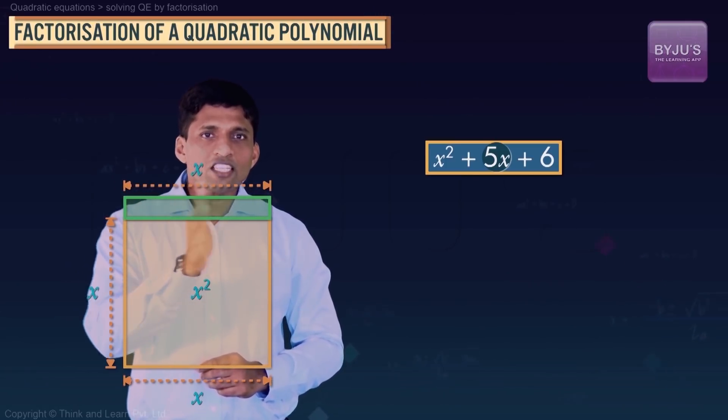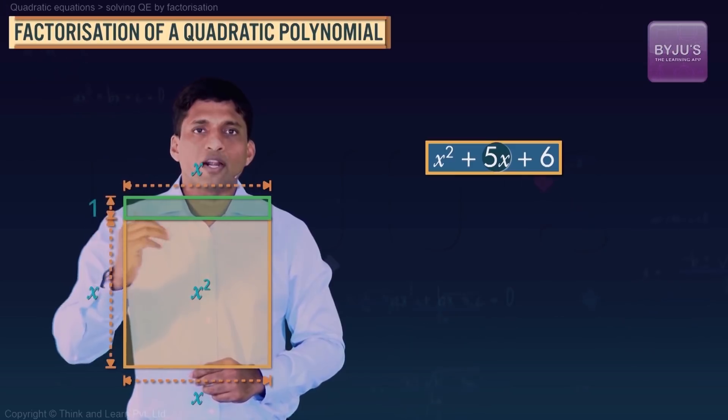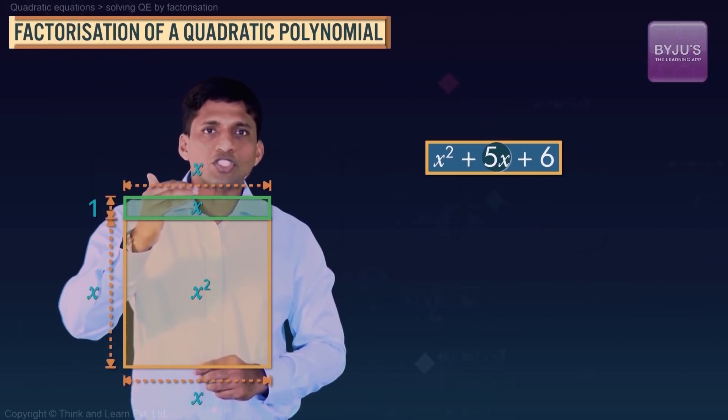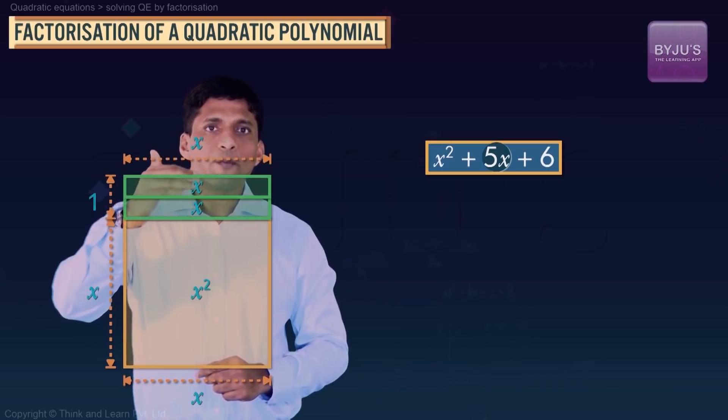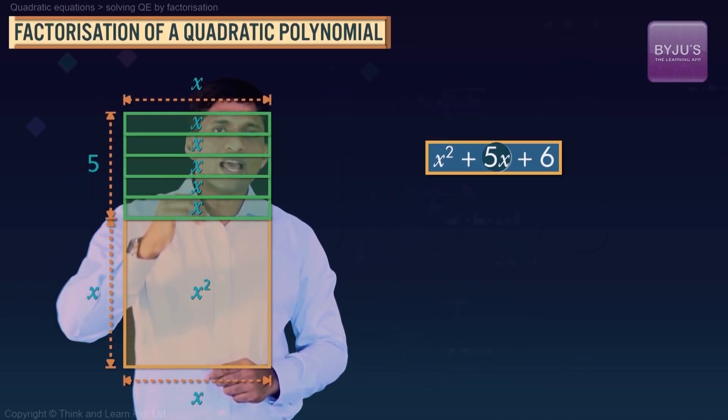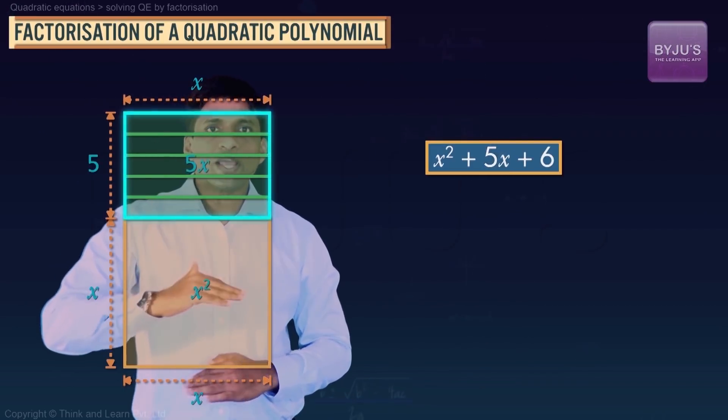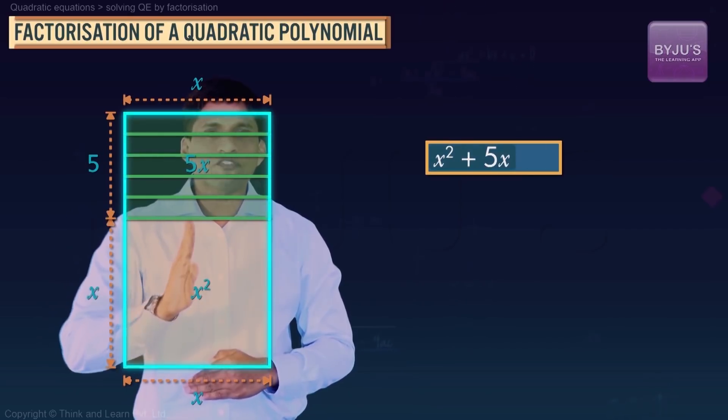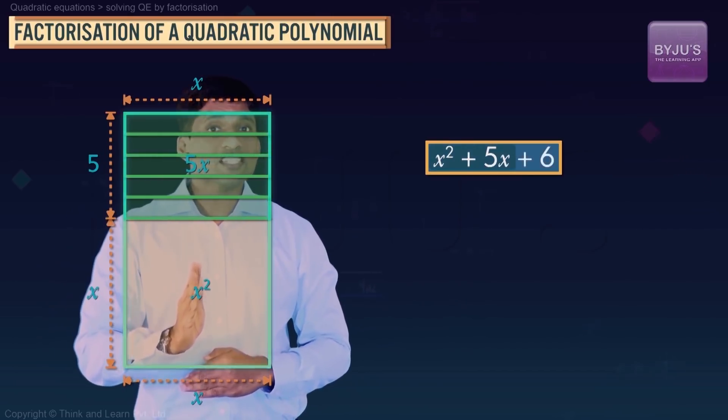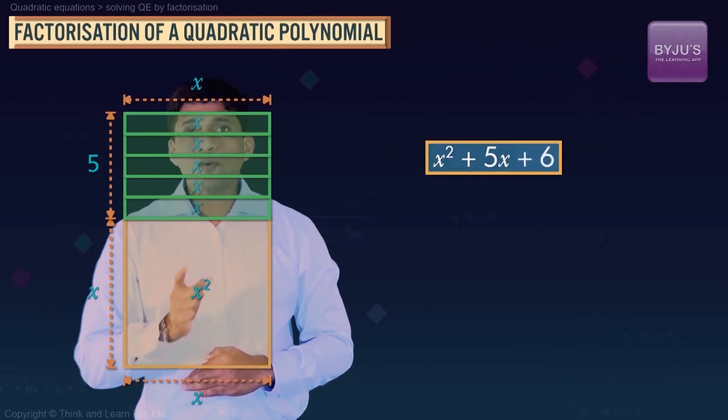Now if I take this 5 times, I'll get x² + 5x. So x² + 5x is the area of this rectangle. 6 is still outside.